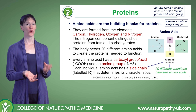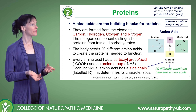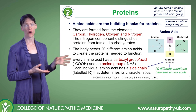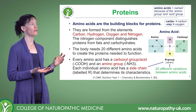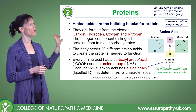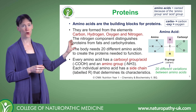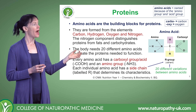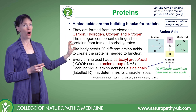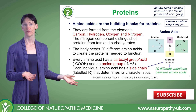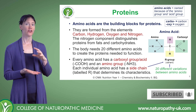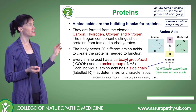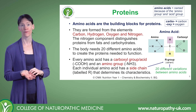Let's start with proteins. Here on the slide you can see the structure of an amino acid. Amino acids have two distinctive functional groups: the amino group at one end and the carboxylic acid group at the other. The R group is the variable part. In the human body there are 20 different amino acids — 20 different variations of R.